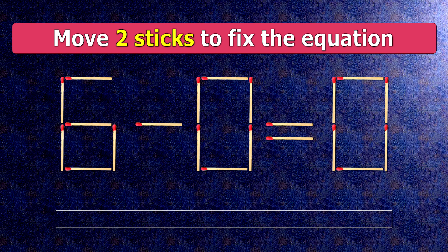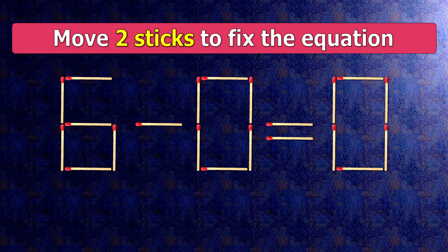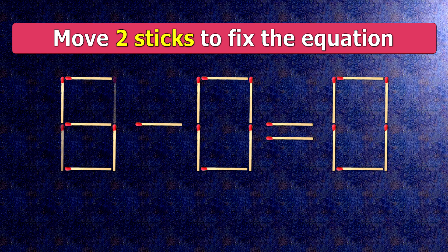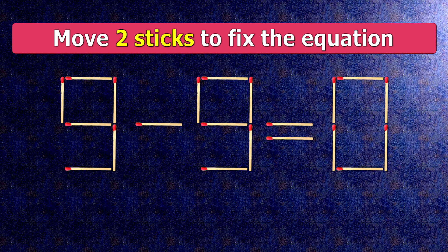How this puzzle is solved. All we need to do is move this match right here and this match right here. Now, when we check the condition, 9 minus 9 is 0.